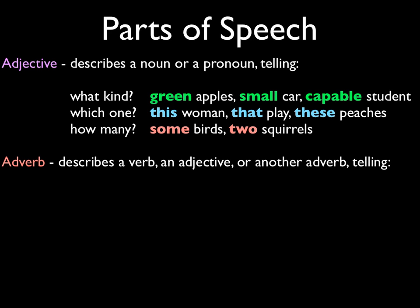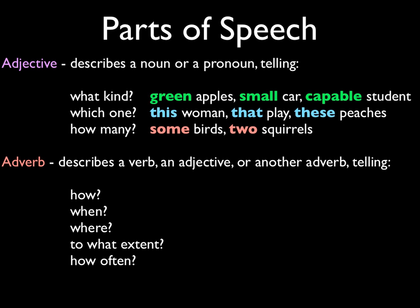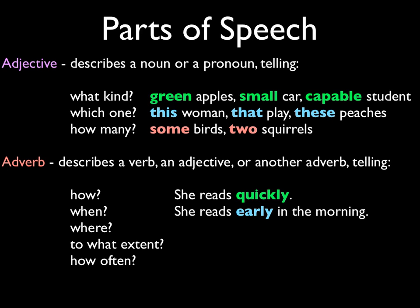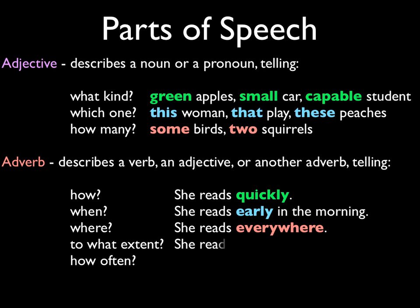Then an adverb describes a verb, an adjective, or another adverb. It answers questions like how, when, where, to what extent, and how often. She reads quickly — it tells you how she reads. She reads early in the morning — that tells you when. She reads everywhere — answers the where question. To what extent? She reads thoroughly — no skimming a book for her. How often? She reads frequently. So an adverb will answer all of those questions.